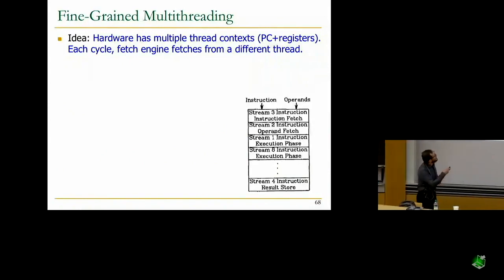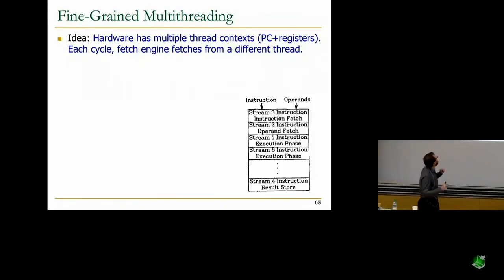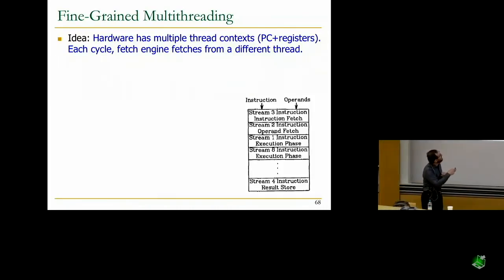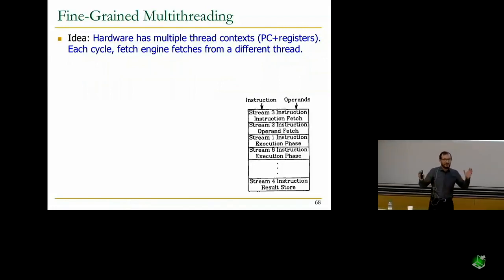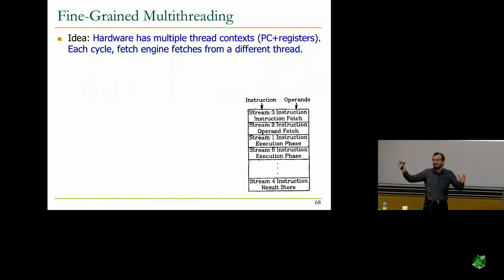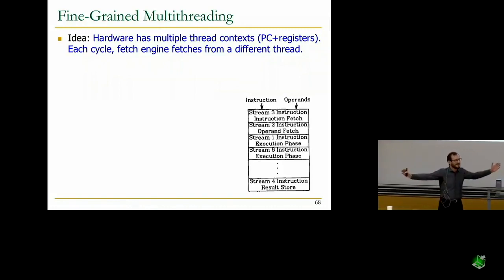The idea is that hardware has multiple thread contexts — multiple program counters, multiple register files, one for each thread. Each cycle, the fetch engine fetches from a different thread, every cycle. You never fetch from the same thread until the instruction of that thread gets out of the pipeline. So you only have one instruction from the same thread in the entire pipeline; everything else is from different threads.